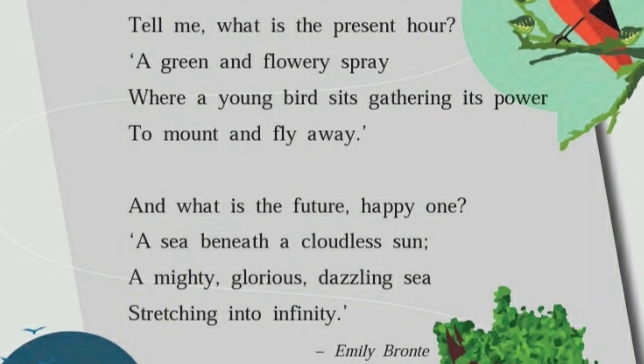Let's move to the last stanza of the poem. The poet asks: 'And what is the future, happy one?' The child replies: 'A sea beneath a cloudless sun, a mighty, glorious, dazzling sea stretching into infinity.' The child says the future will be like a sea — an ocean — beneath a cloudless, clear sun.